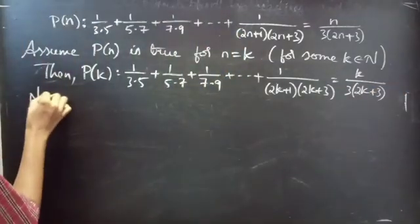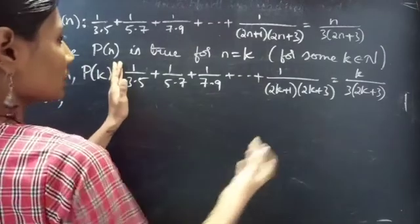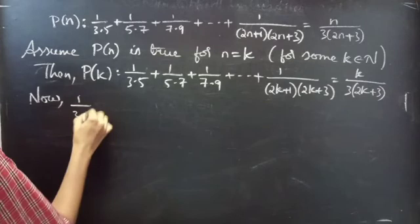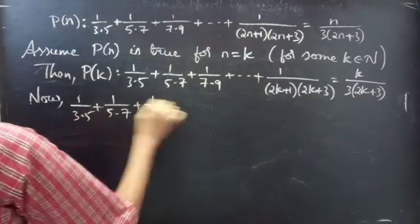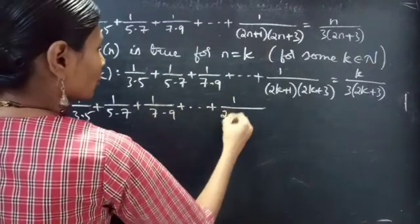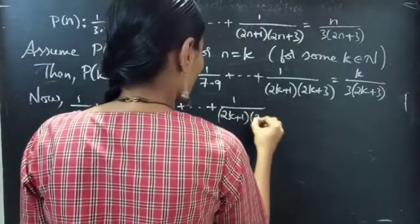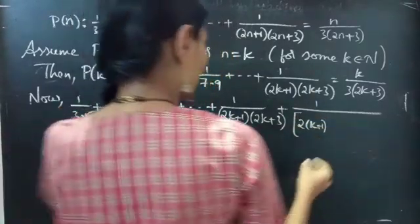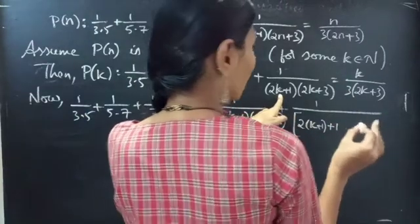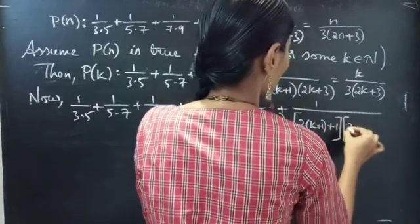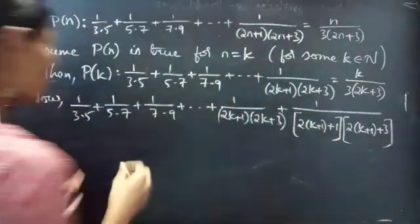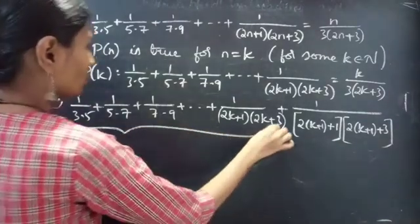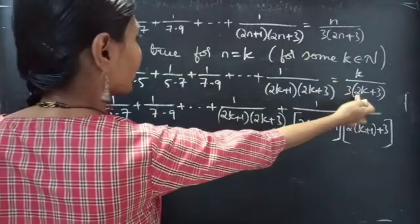Now let's prove for n equals to k plus 1. First we consider k+1 terms of LHS: 1 by 3 into 5 plus 1 by 5 into 7 plus 1 by 7 into 9 plus ... plus 1 by (2k+1) into (2k+3) plus 1 by 2(k+1)+1 into 2(k+1)+3. Since P(k) is true, we can replace the sum of k terms by k by 3 into (2k+3).